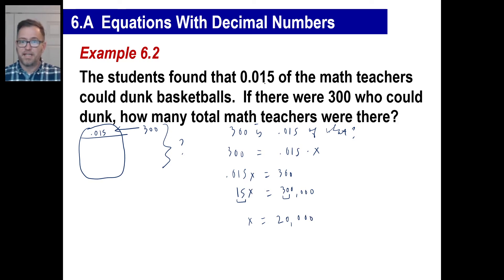Let's see. A little teeny part of the math teachers could dunk basketball. That little teeny part was 300. So the 300 has to be a small part of some big honking number. And there's the honking number, or as mathematicians call it, HN.